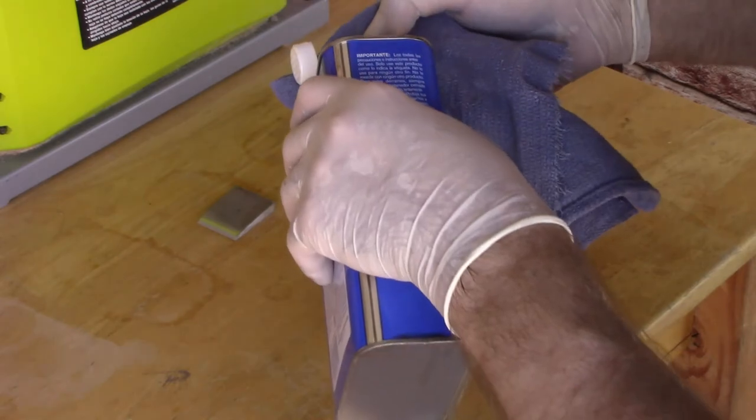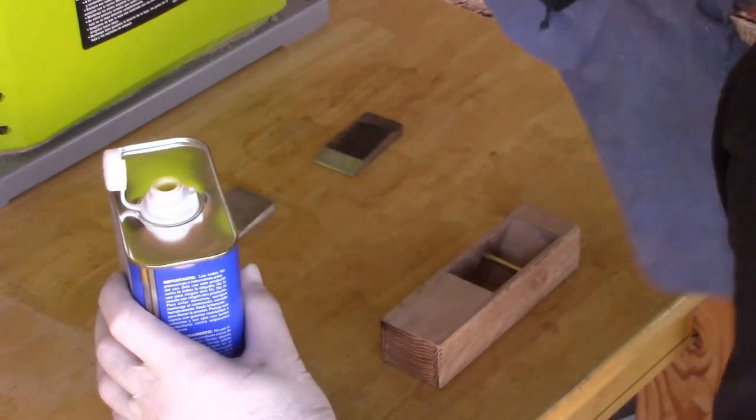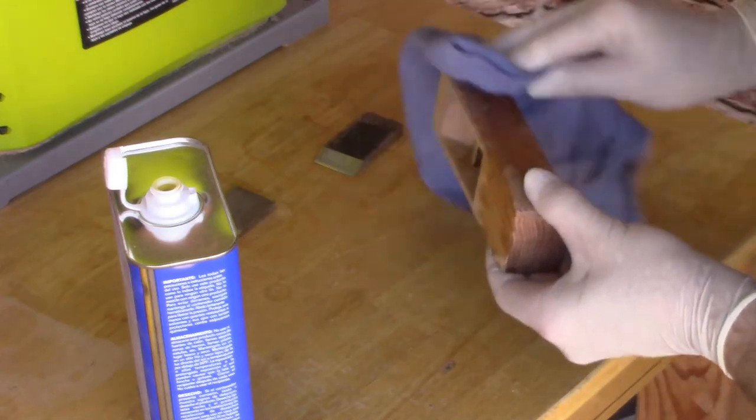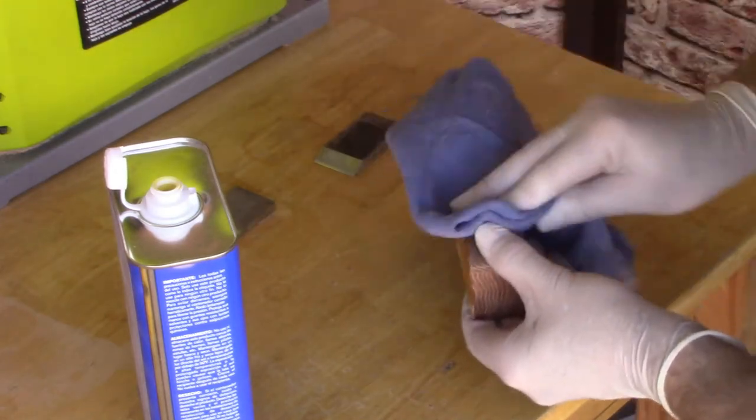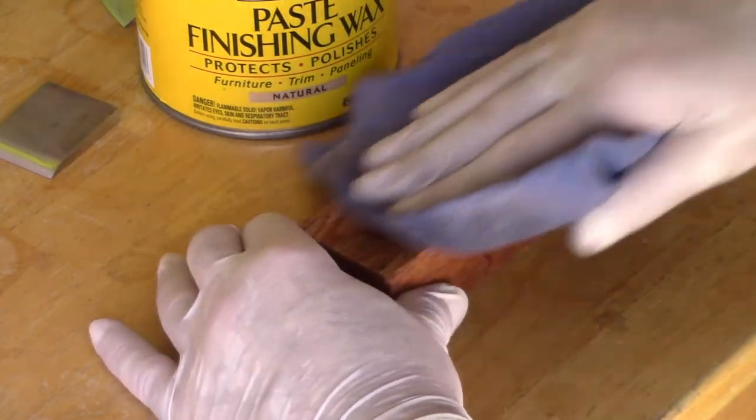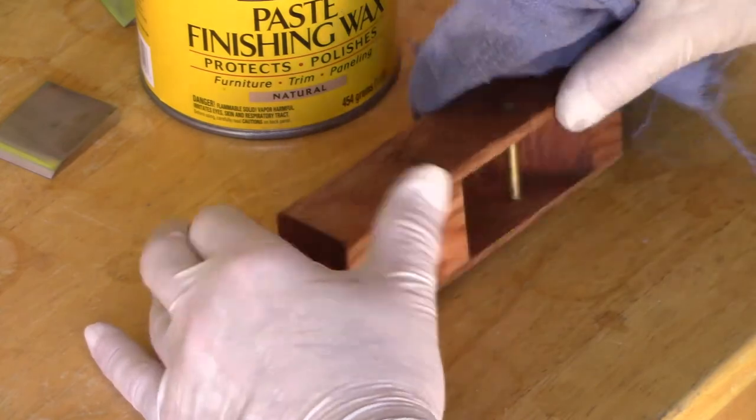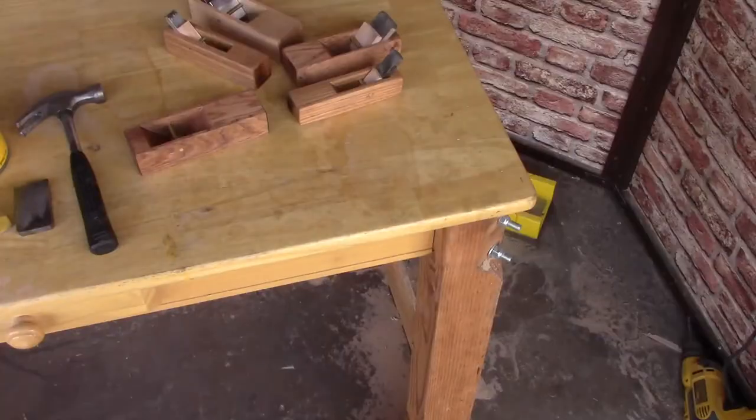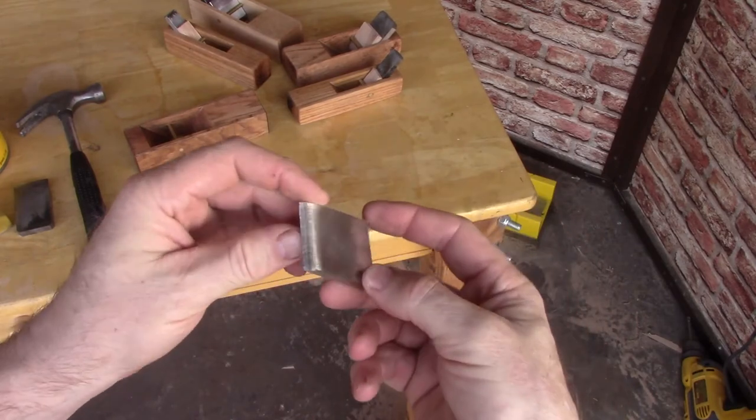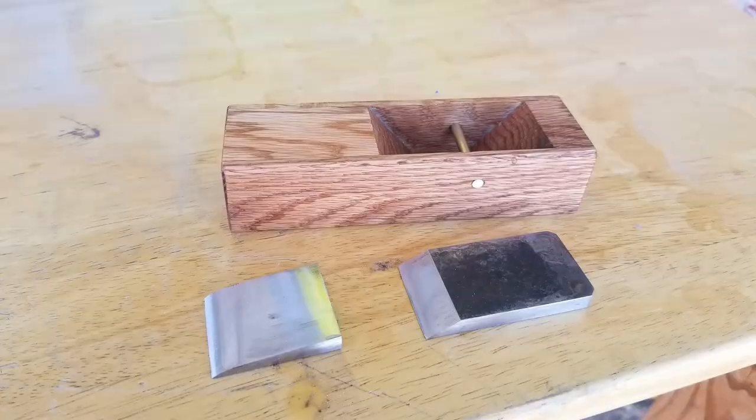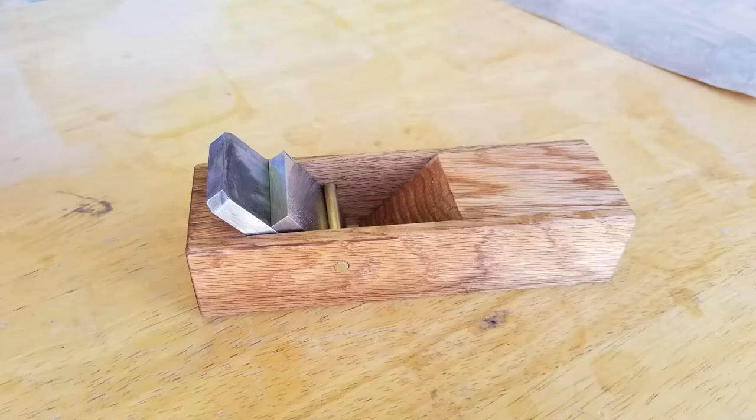Before assembly I finish the plane body with a simple finish of burnt linseed oil followed by paste wax. One final piece I forgot to mention is the chip breaker. The chip breaker is a simple wedge that is as wide as the plane iron at one end and tapers to less than a millimeter at the other end. It wedges between the brass rod and the plane iron and holds the iron in place.